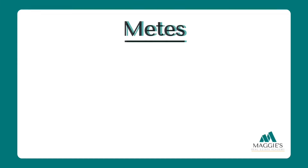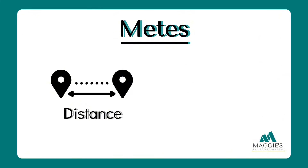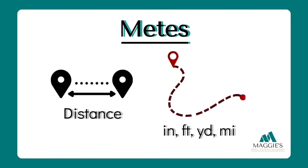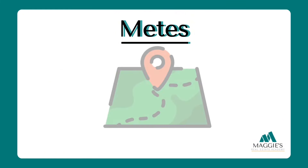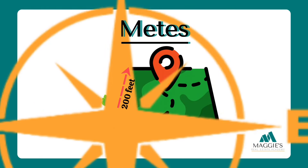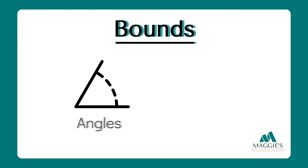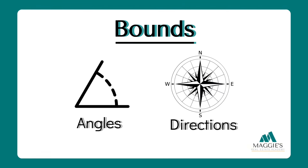The 'metes' part tells us the distance between two points — like inches, feet, yards, and miles. For example: 'Start at the oak tree, walk 200 feet northeast to the river.' The 'bounds' part describes the angles and compass directions to the property's boundaries — for example: 'Follow the riverbank, turning 90 degrees southwest at the big rock.'